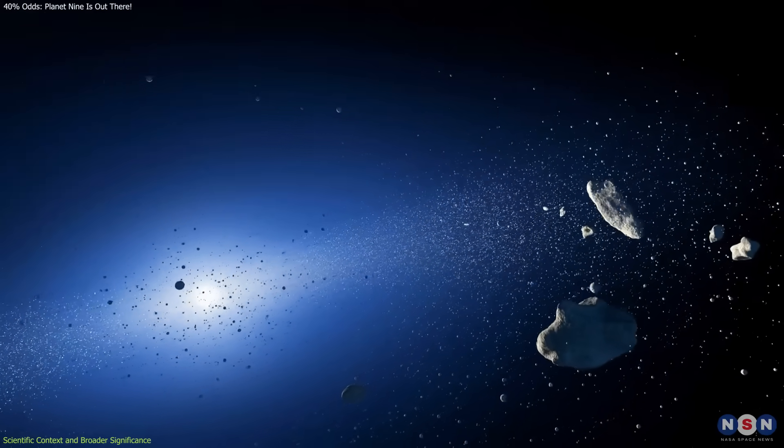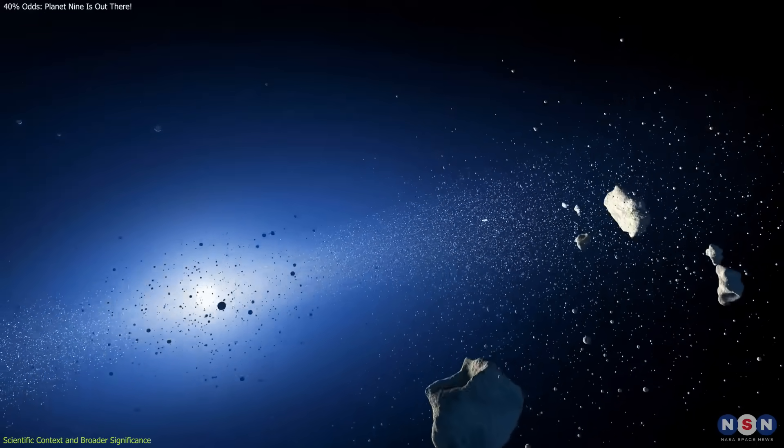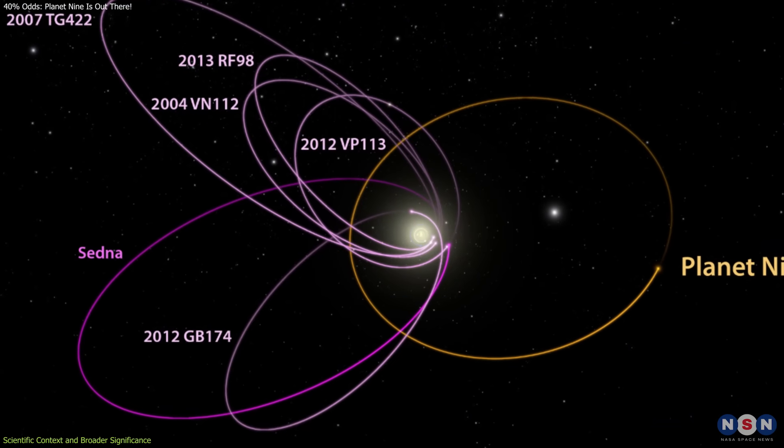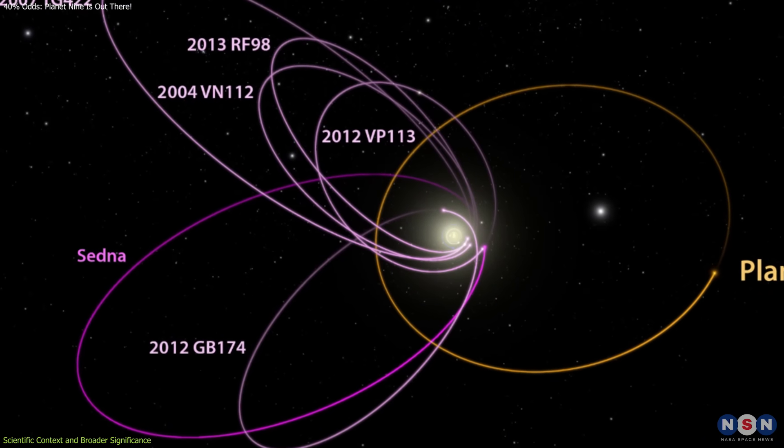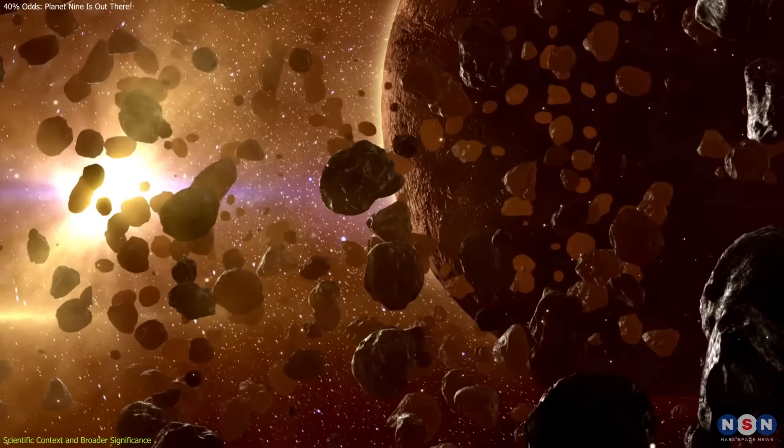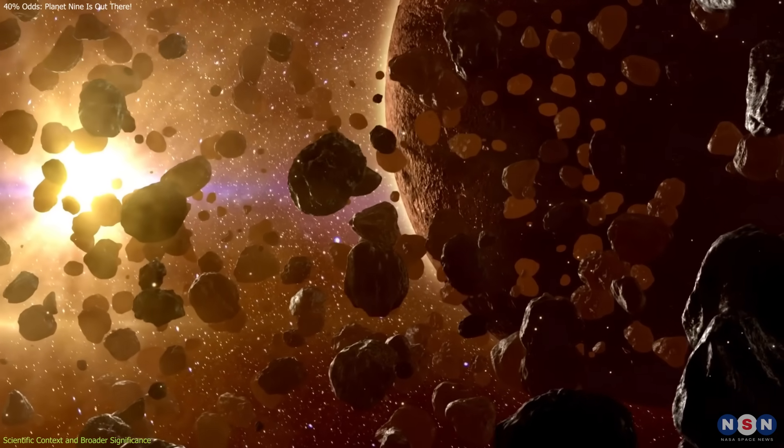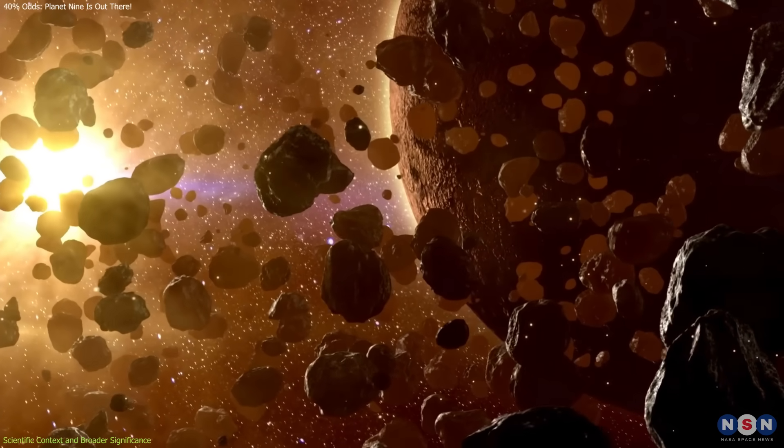Another mystery involves trans-Neptunian objects. Some of them, like Sedna, have elongated and clustered orbits that suggest they are under the gravitational influence of something massive and far away.